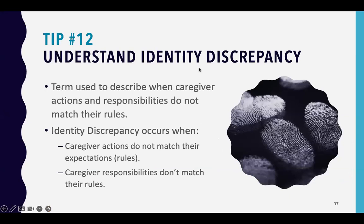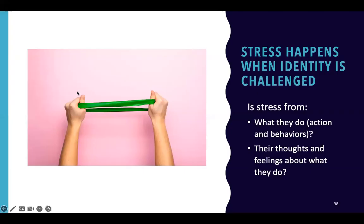When you're feeling conflict, we call it identity discrepancy — a term used to describe when the caregiver's actions and responsibilities do not match their rules. A good way to illustrate this: take a rubber band, hold it between your hands and pull it apart. On one side are your actions and behaviors; on the other side are your thoughts and feelings about what you do. When you pull that rubber band, that's the stress you're experiencing. To relieve the tension, you have to change one of those sides — either change your actions or change your thinking.